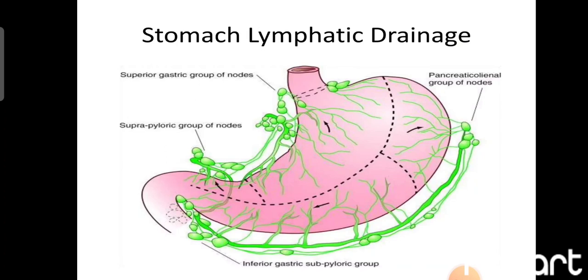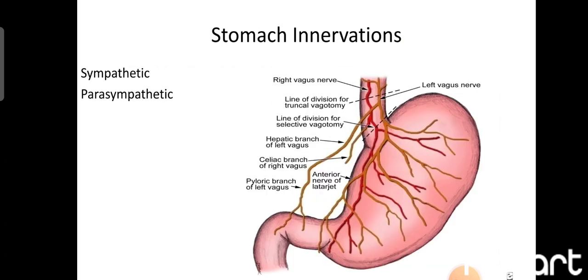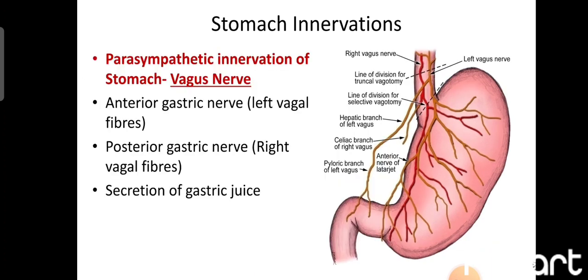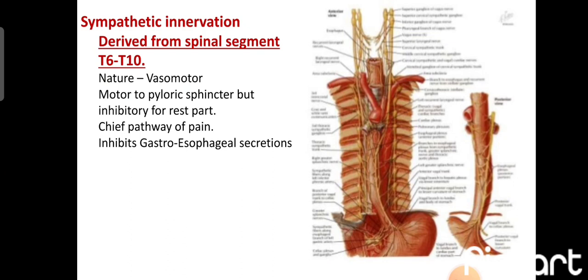The innervation of the stomach is provided by both sympathetic and parasympathetic nerves. Parasympathetic innervation is from the vagus nerve — the left vagus runs on the anterior surface and the right vagus on the posterior surface, responsible for secretion of gastric juices. Sympathetic innervation is from T6 to T10 spinal segments; these are vasomotor, motor to the pyloric sphincter but inhibitory to the rest of the stomach, and are the chief pathway of pain.